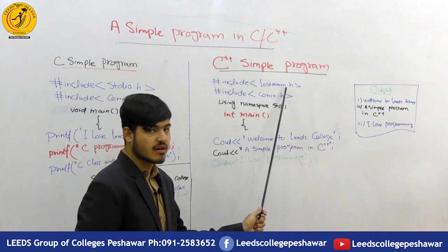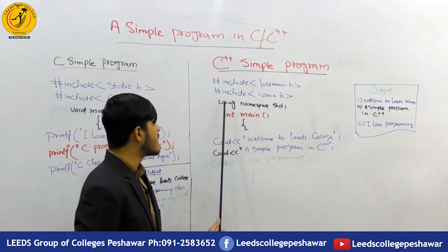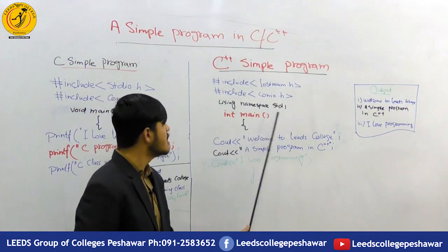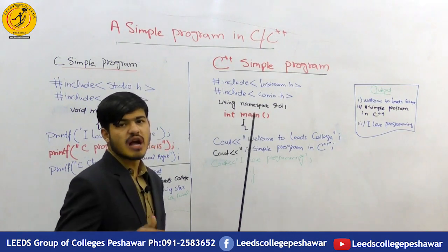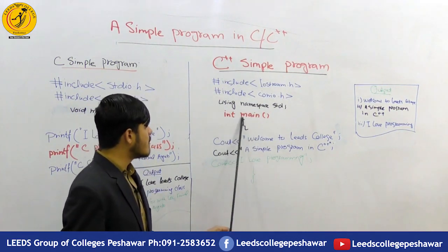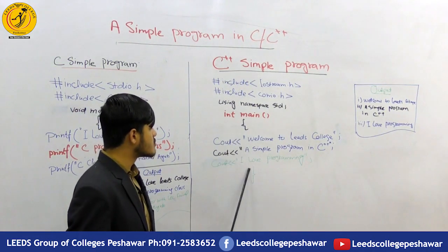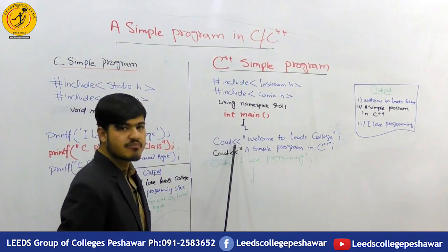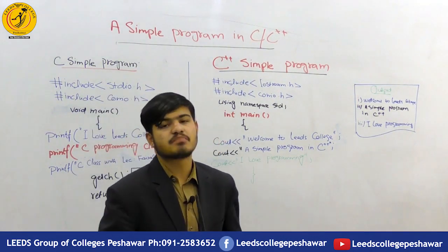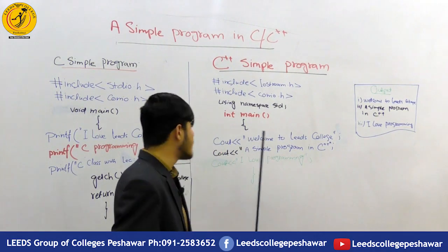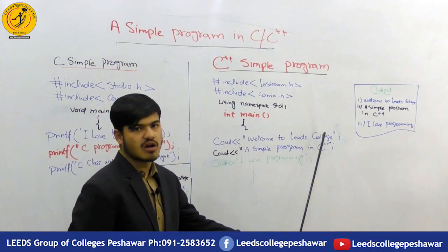Next, we include conio.h. Here we have 'using namespace std', and this is the int main or void main which you can type. This is the main body and the programming body which is closed. This is the Cout statement. As I mentioned, C is the functional language and C++ is the operator language. Here we have an extraction operator which we type with Cout. This is the way we type: 'Welcome to Leeds College.' Is it clear?